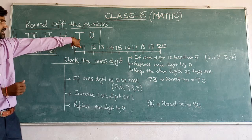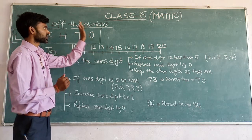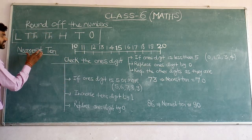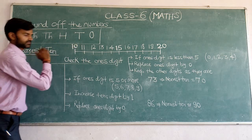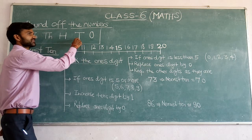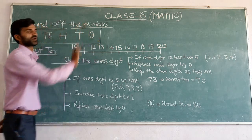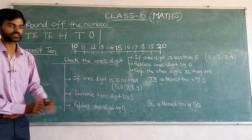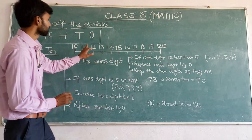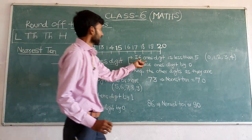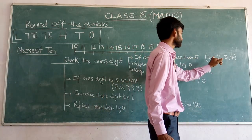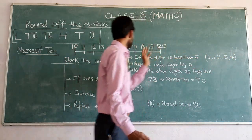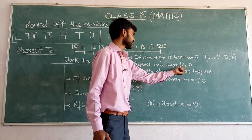To find the nearest ten, look at the table. We check the place just before the tens place, which is the ones place. First rule: if the ones digit is less than five — meaning 0, 1, 2, 3, or 4 — replace the ones digit by zero and keep the other digits as they are.